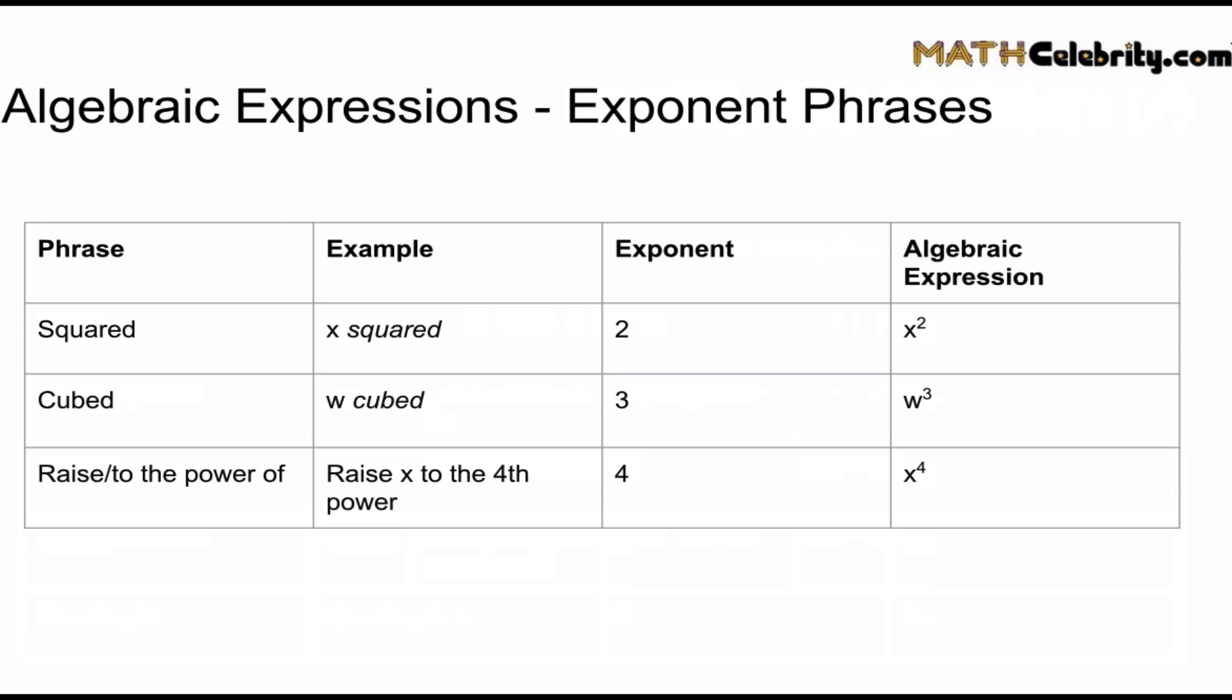Now finally, we've got raise x to the fourth power. The fourth power really doesn't have a shorthand notation. So you know we're raising something to a power. In this case, the something is the variable x and the power is 4. So for the power, we always use the superscript notation.